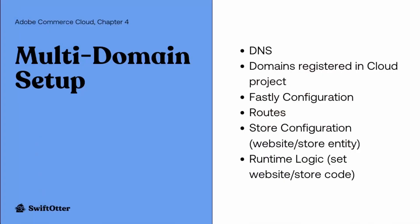Let's think through the different aspects of configuration that we're likely to need to touch to support a multi-domain setup like this. First, of course, we have DNS — you need the appropriate records in your DNS settings for the domains that you're pointing to your cloud project. Those domains need to be registered in the cloud project itself. There's Fastly configuration to take care of for routing those domains, and we have the routes that we need to configure within our cloud application like we've looked at.